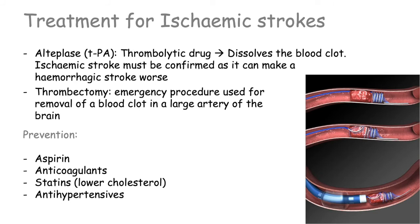In terms of treatments for ischemic stroke, patients are usually given alteplase, also known as TPA or tissue plasminogen activator. This is a thrombolytic drug that will dissolve the blood clot causing the ischemic stroke. It must be given as soon as a diagnosis of ischemic stroke is made, and the patient must undergo a brain scan to confirm it is an ischemic stroke and not a hemorrhagic stroke, as it can make bleeding much worse in hemorrhagic strokes.